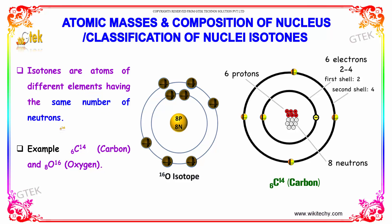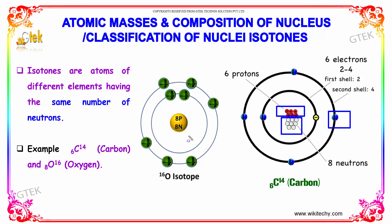As indicated, you can see the carbon, which has 6 protons, 6 electrons, and 8 neutrons. The oxygen has 8 neutrons as well. So both have the same neutron count, which is why they are referred to as isotones.